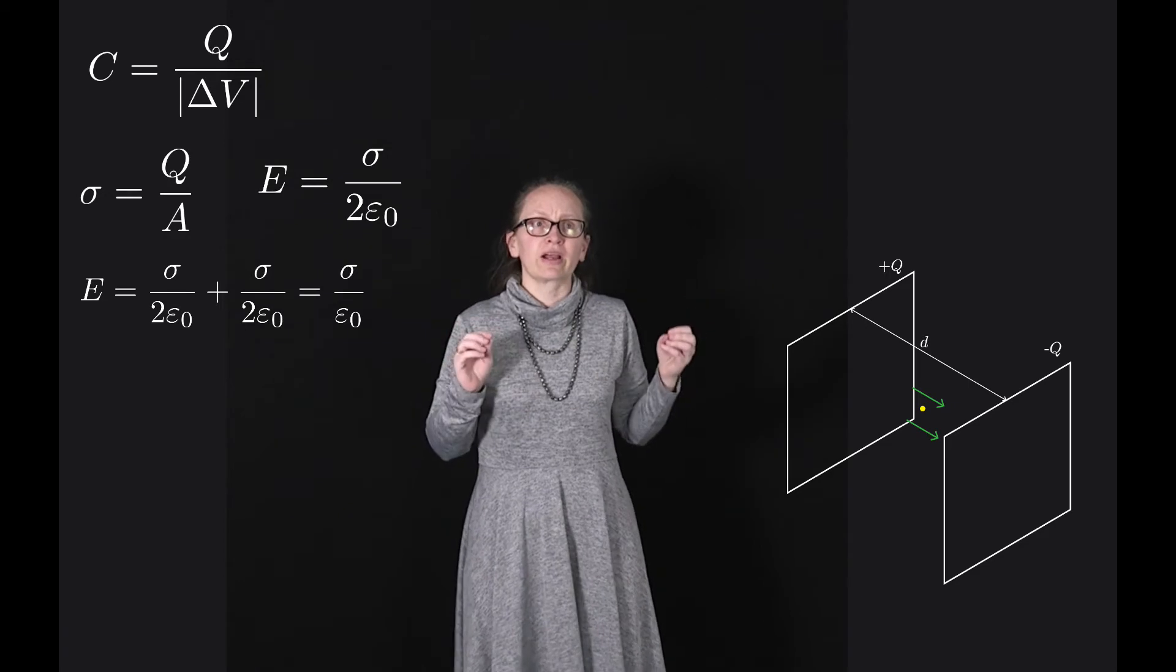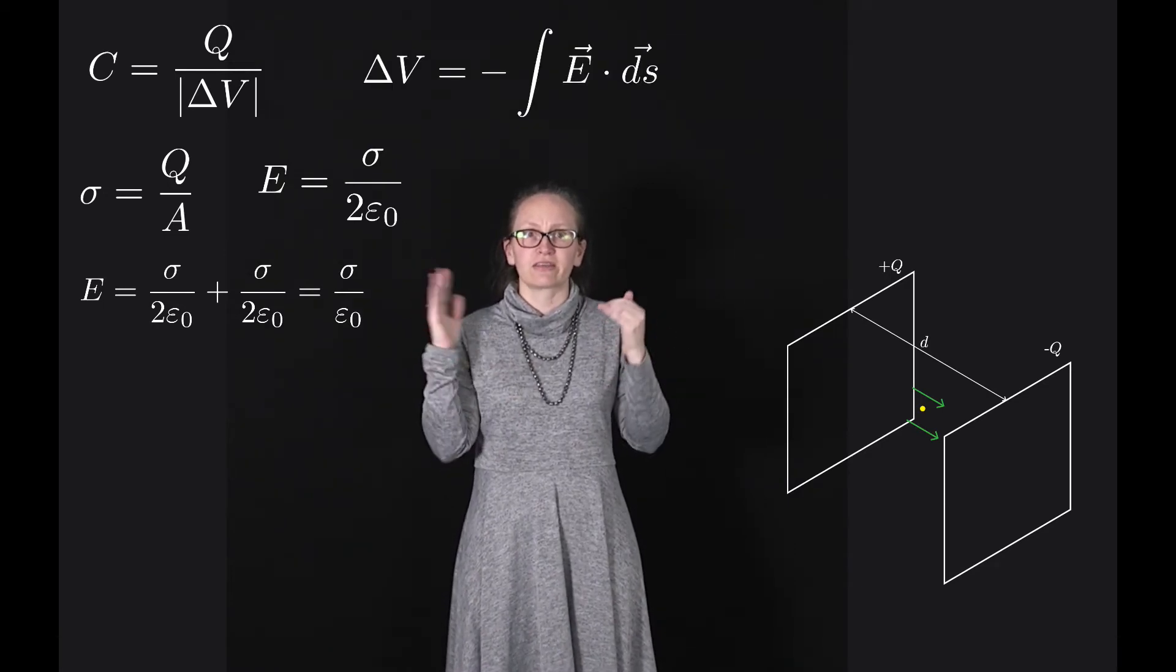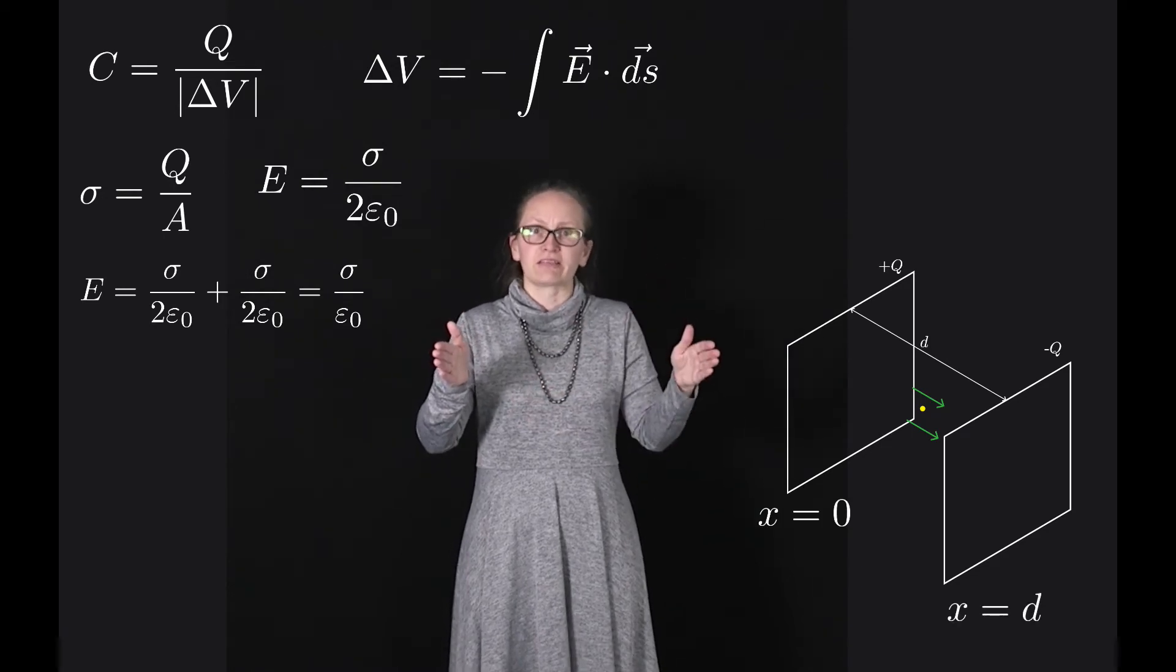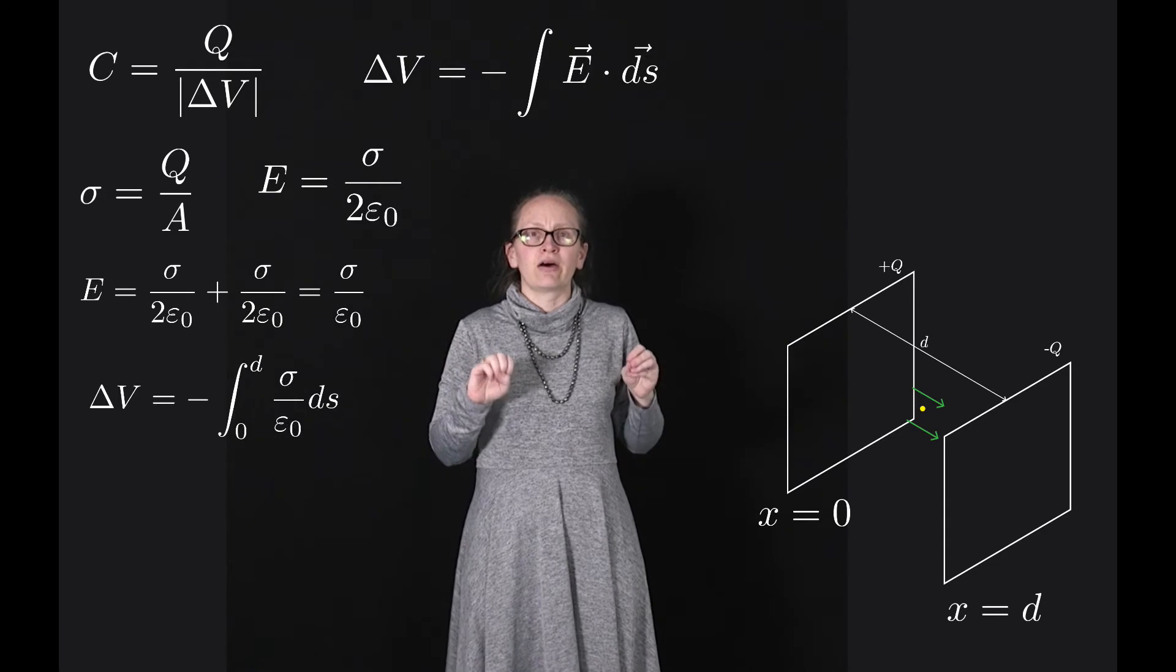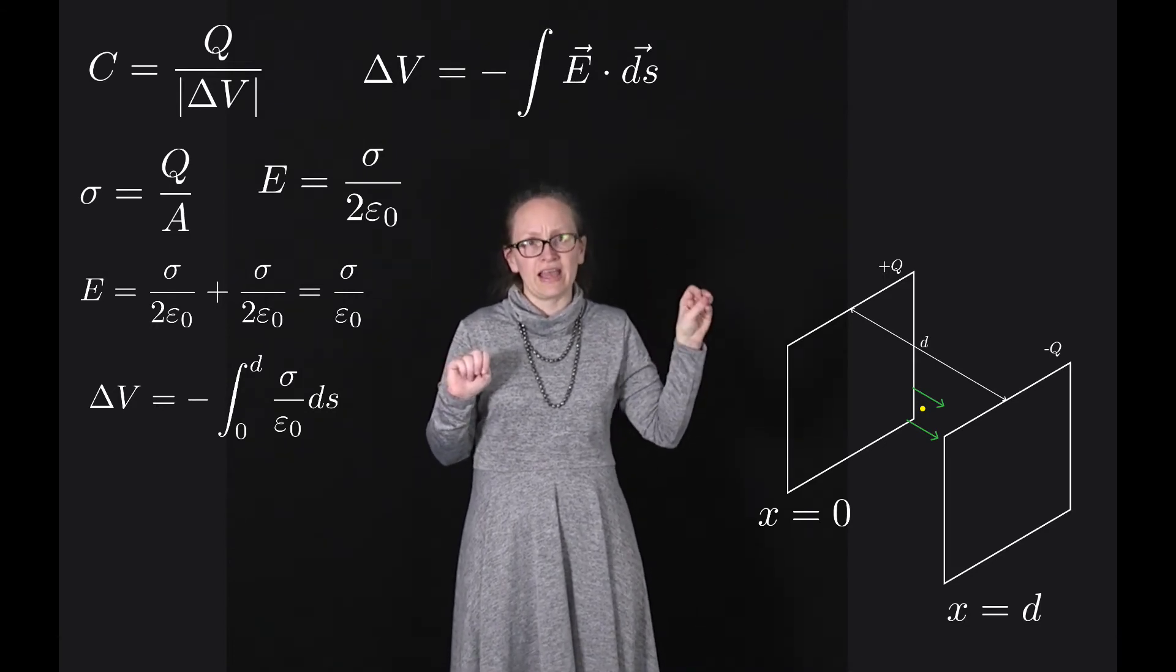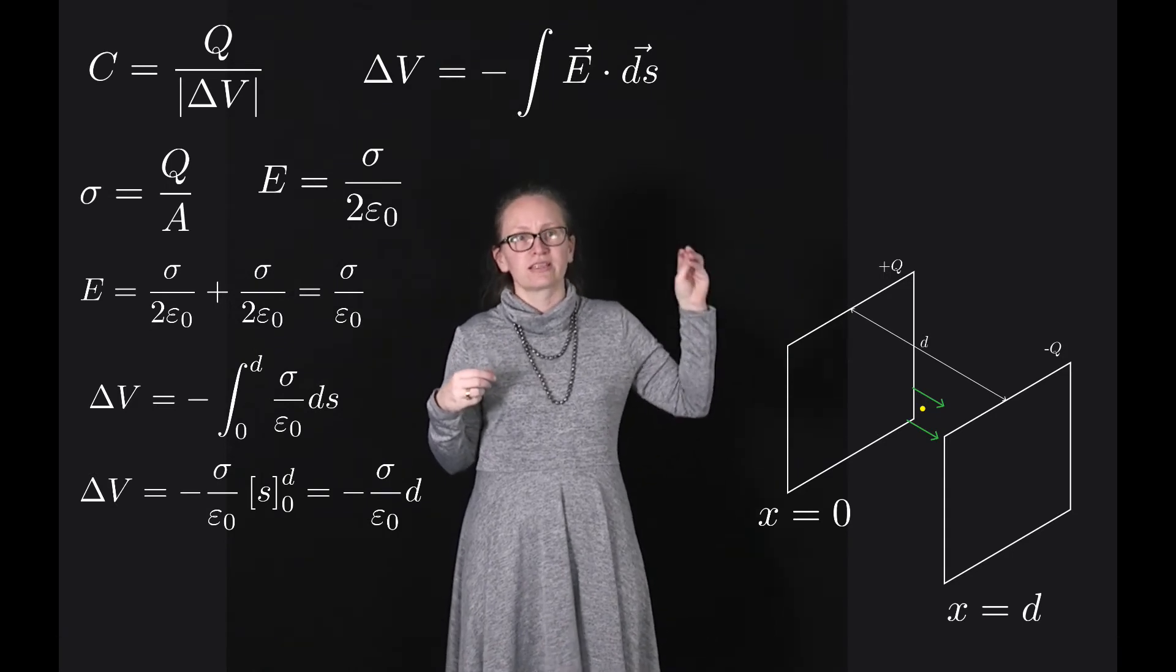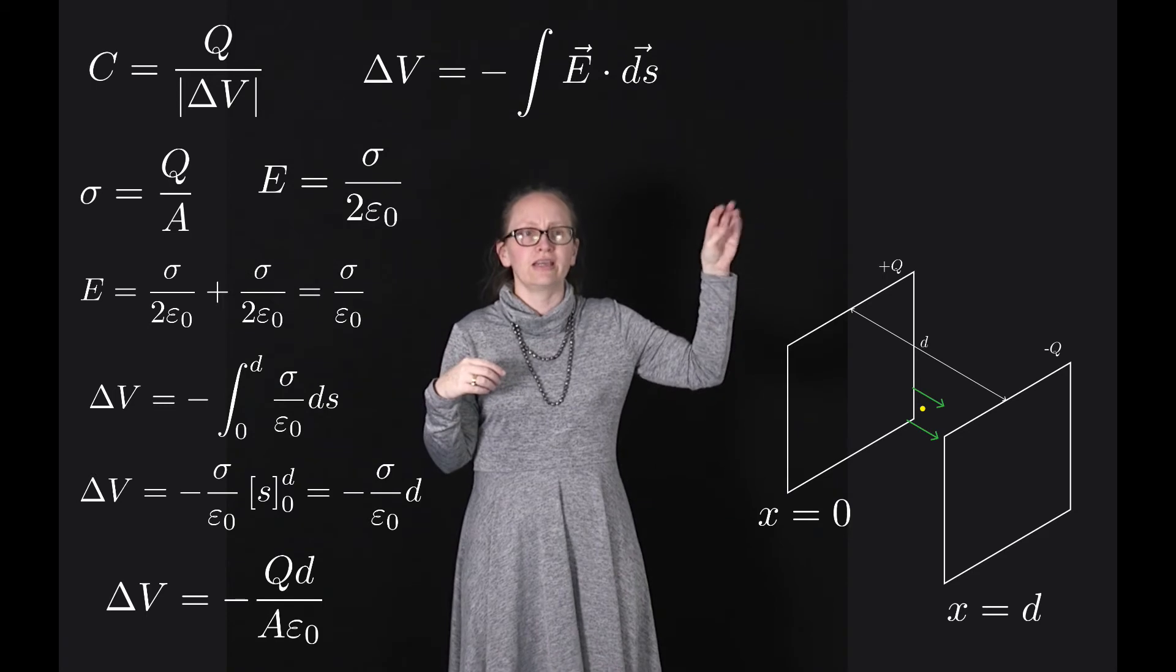Now that we found the electric field, we can work out what the potential difference is between our two plates. To do this, we're going to need to use our equation that the potential difference delta V is equal to minus the integral of E dot ds. Because the separation between the two plates is d, let's call the positive plate as at x equals 0, and that means that the negative plate is at x equals d. So this will let us put limits onto our integral. The potential difference delta V is equal to minus the integral from 0 to d of sigma over epsilon naught ds, which is equal to minus sigma over epsilon naught, and then when we integrate this we just end up with s and we need to evaluate that at 0 and d, which is just equal to minus sigma over epsilon naught times d. And sigma is equal to Q over A. So this is just equal to minus Qd over A epsilon naught.